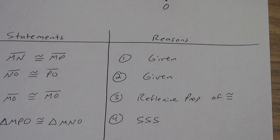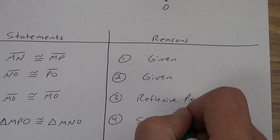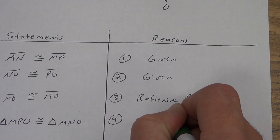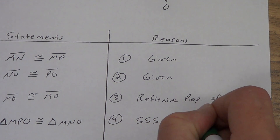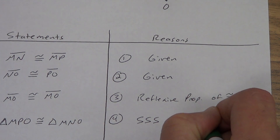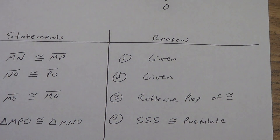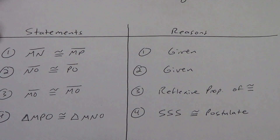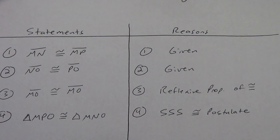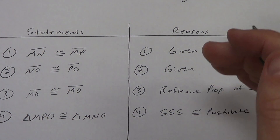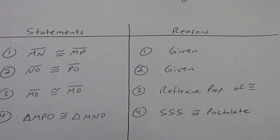Make sure you're always checking your order. Keep in mind that side-side-side is a postulate. The only two that are theorems are angle-angle-side and HL. If you can do these four steps, you're doing pretty good — that means you're understanding the prior lessons pretty well.